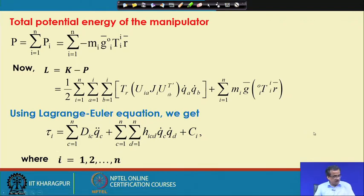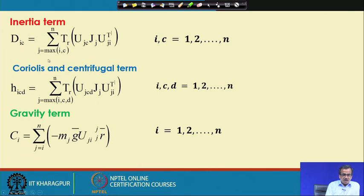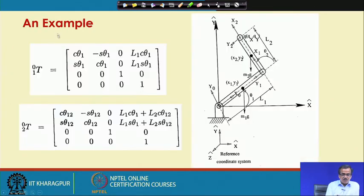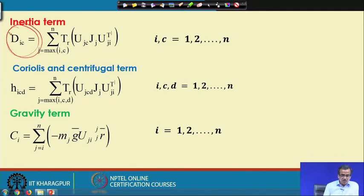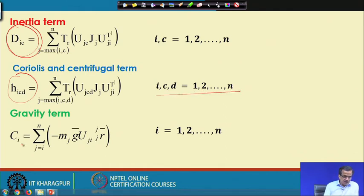The inertia term d_ic equals summation j from max(i,c) to n of trace of U_jc, Jj, U_ji transpose, where i and c vary from 1 to n. The Coriolis-centrifugal term h_icd equals summation j from max(i,c,d) to n of trace of U_jcd, Jj, U_ji transpose, where i, c, d vary from 1 to n. The gravity term Ce equals summation j from i to n of minus mj, g_bar, U_ji, Rj with respect to j, where i varies from 1 to n.